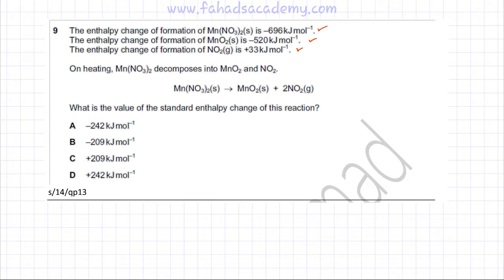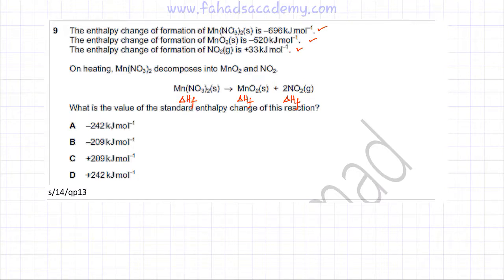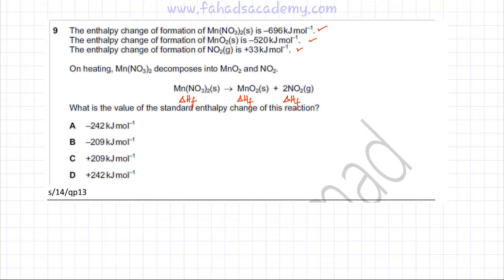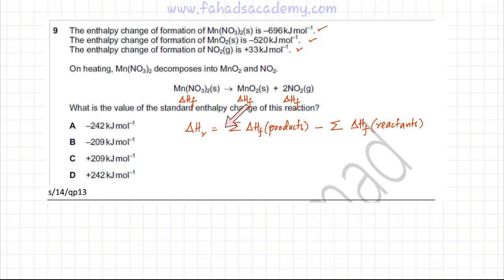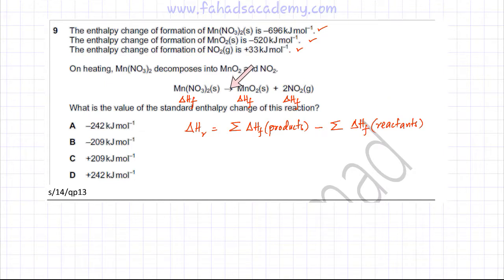We need to figure out the enthalpy change for this particular reaction. The enthalpy changes of formation of NO₂, MgNO₂, and magnesium nitrate are all known. Since we know the enthalpy changes of formation of both products and reactants, we can simply apply the formula: enthalpy change of reaction equals the sum of enthalpy changes of formation of products minus the sum of enthalpy changes of formation of reactants.